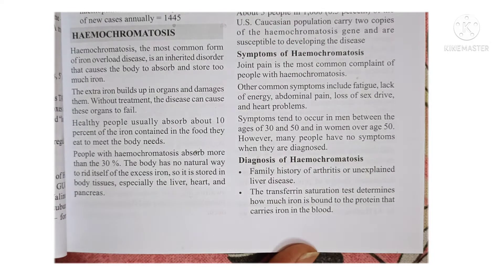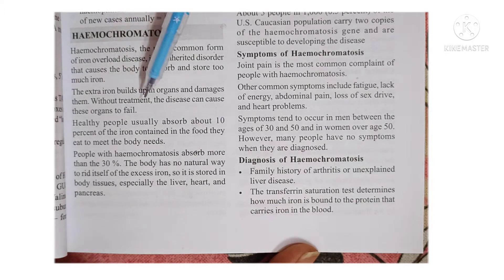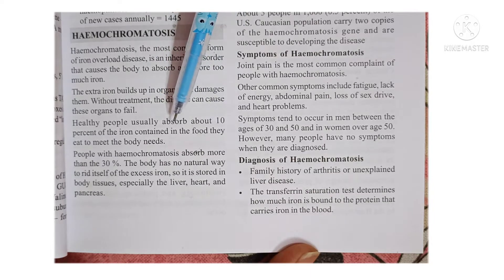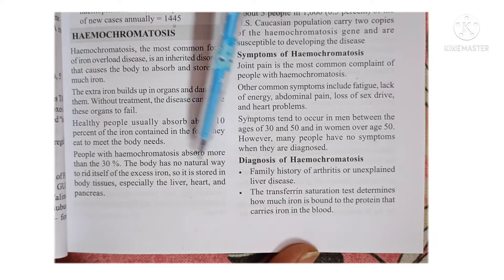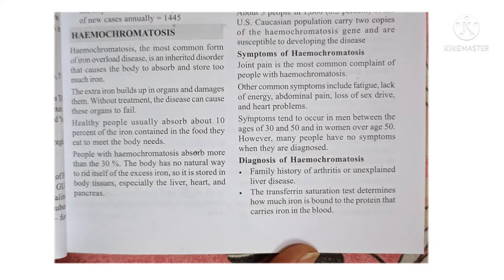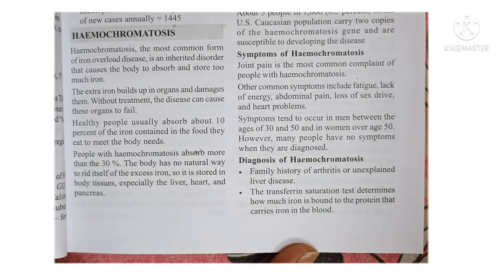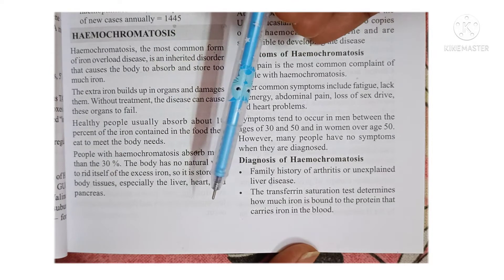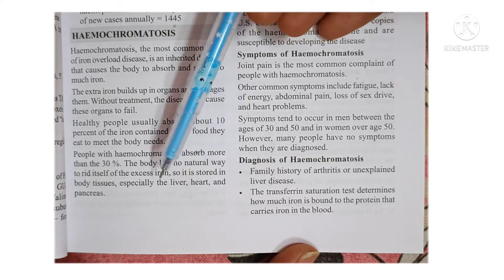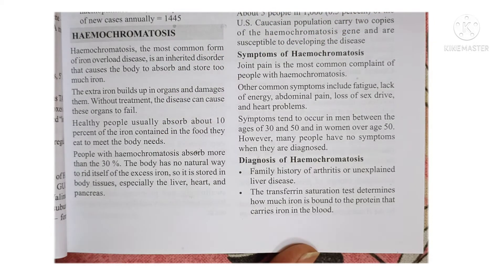The extra iron damages all the vital organs because it attaches to them, causing them to lose function. There will be damage to major vital organs leading to organ failure. Healthy people usually absorb only 10% of dietary iron, but in hemochromatosis more than 30% is absorbed. This mechanism is disturbed and excess iron builds up in body tissues and major vital organs, leading to damage in the liver, heart, and pancreas.